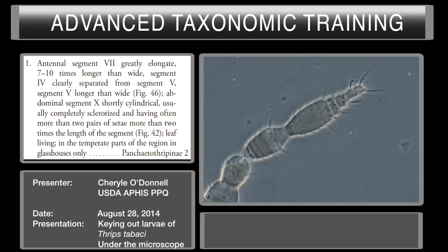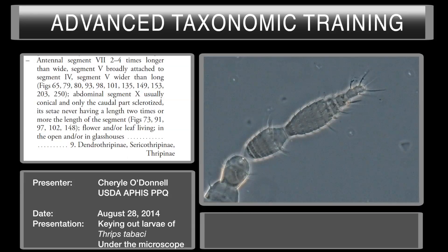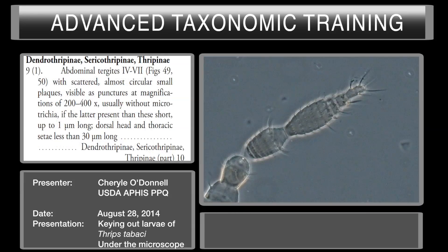The second part of this couplet: segment number four clearly separated from segment five. You can tell there are segment four and segment five, though it's not extremely clear. Moving to the second part of the couplet — antennal segment seven two to four times longer than wide. Yes, that's about two times. Also, segment five is broadly attached to segment four. Yes, it is broadly attached. This takes us to couplet number nine, covering the Dendrothripinae, Sericothripinae, and Thripinae.